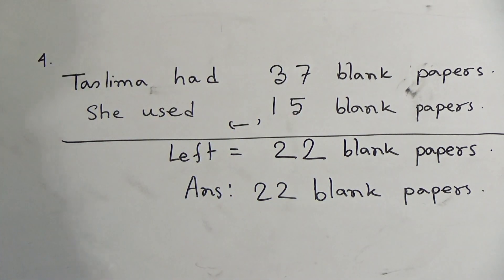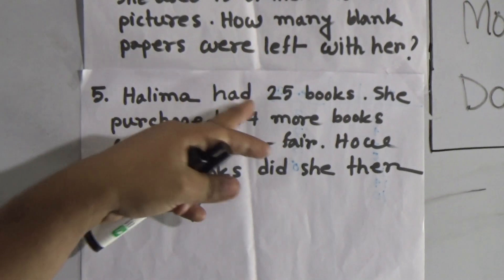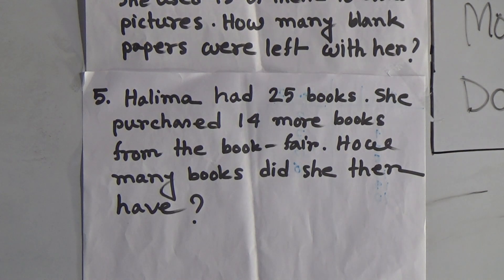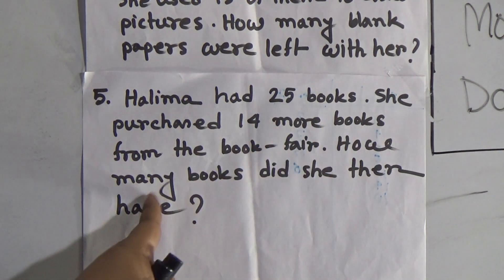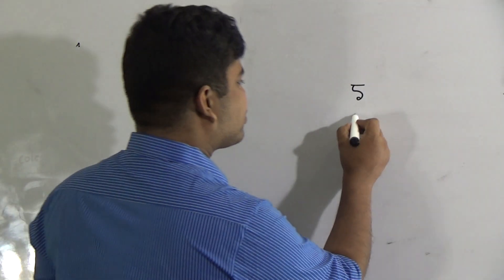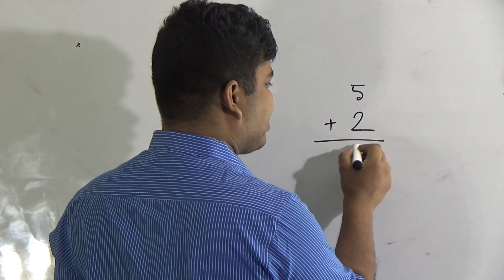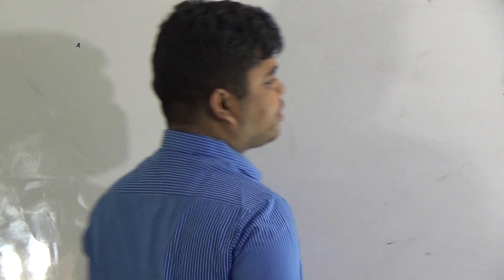Now we shall solve question number five. Halima had 25 books. She purchased 14 more books from the book fair. How many books did she then have? Suppose you have five books and you went to Ekushey Book Fair and bought two more — you do addition: five plus two equals seven. Now you have seven books. Just like this, we solve question number five.